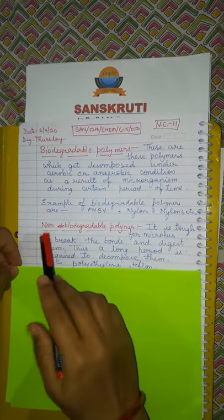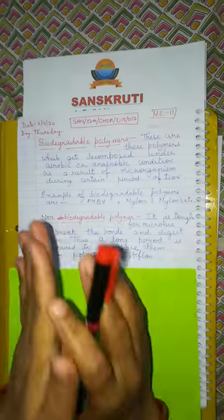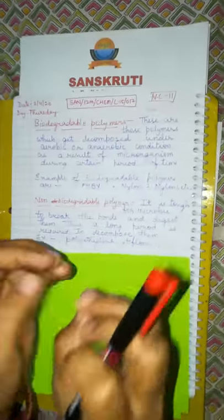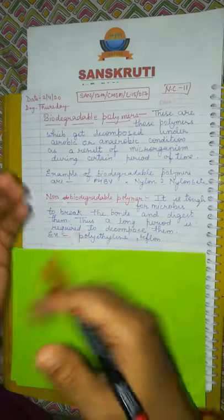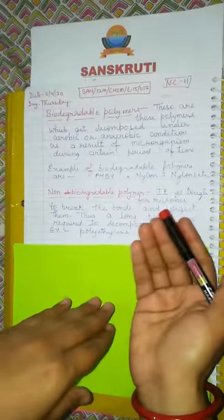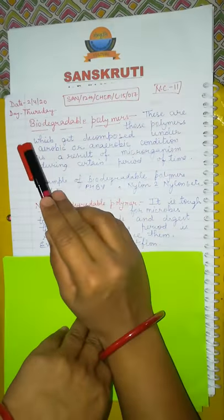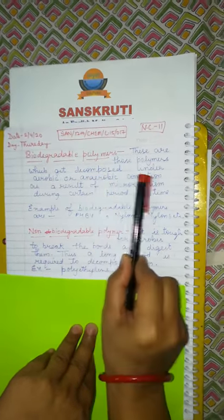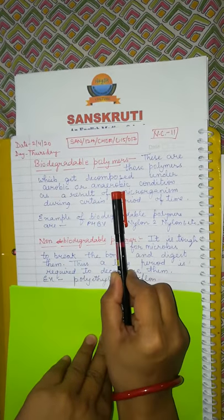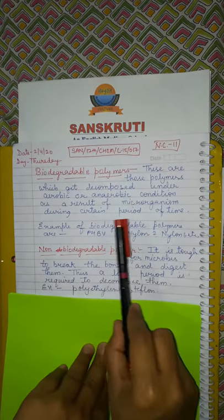We are coming to the next topic: biodegradable polymer and non-biodegradable polymer. You already know the difference between biodegradable and non-biodegradable because you have been studying this since class 6, 7, 8. So I don't need much explanation on this. I'll just read out the definition. Biodegradable polymers are those polymers which get decomposed under aerobic or anaerobic conditions as a result of microorganisms during a certain period of time.